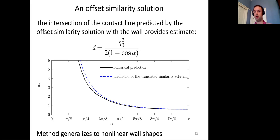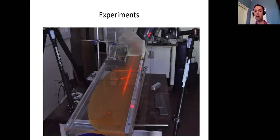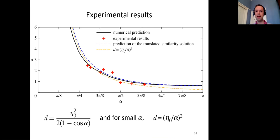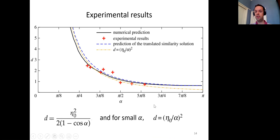This method of translating the similarity solution according to the exact α = π solution works for any nonlinear wall shape — it's simply where the wall intersects the universal translated similarity shape. We carried out experiments using laser lines with a constant flux gate, measuring the detachment location along the wall. The experimental results (red crosses) agree well with the numerical results and the prediction of the translated similarity solution. For small α, the analytic expression for d approximates to η₀/α², shown as a yellow dot-dashed line, also agreeing well with experiment and numerics.